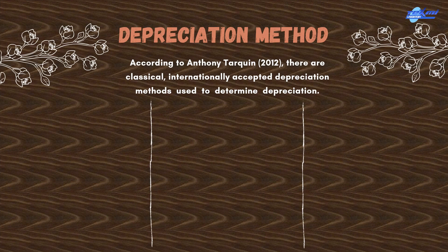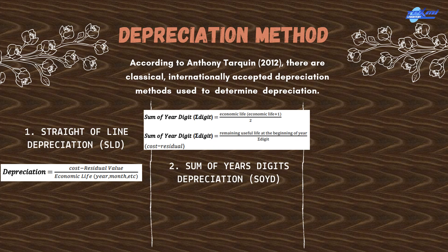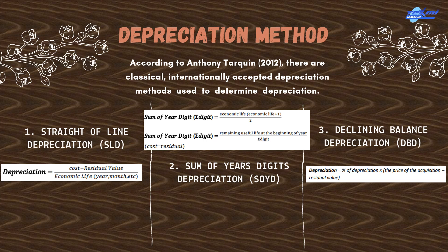Depreciation Methods. According to Anthony Tarquin, there are classical internationally accepted depreciation methods. First is Straight Line Depreciation or SLD, a method whereby equal portions of the amount paid for an asset are shown as an expense during each accounting period of the life of the asset. Second is Sum of Years' Digits Depreciation or SOYD, an accelerated depreciation method where more depreciation occurs early in the asset's life than in its later life. Third is Declining Balance Depreciation or DBD, an accelerated depreciation method in which the depreciation expense declines with each period of the fixed asset.